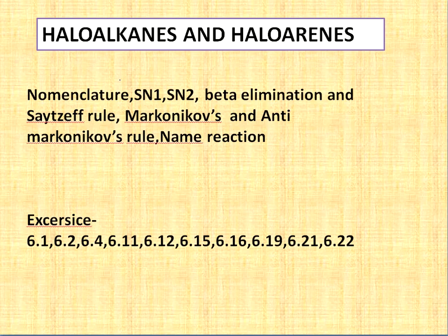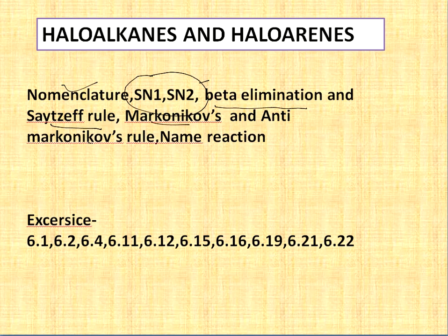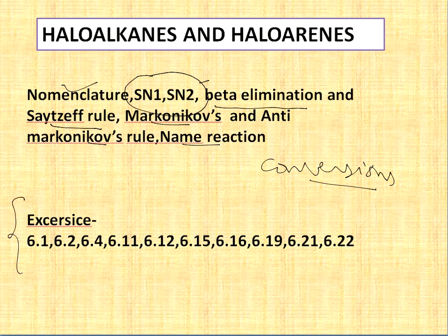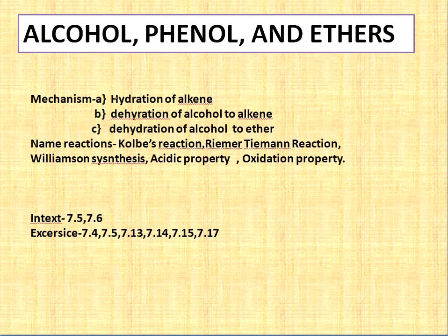Next is Organic Chemistry. You have to learn it in sequence. First, Haloalkanes and Haloarenes — start with nomenclature. SN1 and SN2 reactions will definitely come, and the difference between them will also come. Beta elimination and Saytzeff's rule — which is the major product and which is the minor — Markovnikov's rule and anti-Markovnikov's rule, and name reactions and conversions can also come from this chapter.